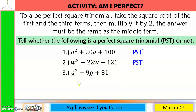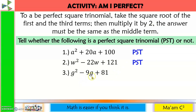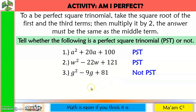Number 3: the square root of g squared is g; the square root of 81 is 9. g times 9 is 9g, times 2 is 18g. But the middle term is only 9g. Therefore, this is not a PST.